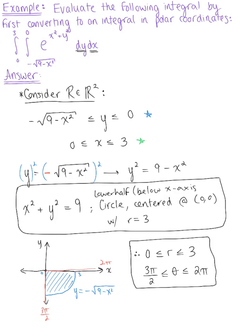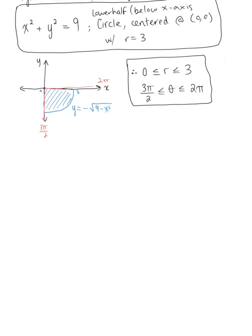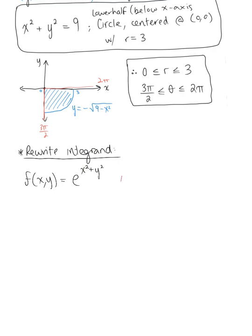We have the bounds for our polar integral, and now we want to rewrite the integrand. We're given that f(x, y) equals the natural exponential raised to x squared plus y squared. Since x squared plus y squared equals r squared in polar coordinates, our function in terms of r and theta is e raised to the r squared.